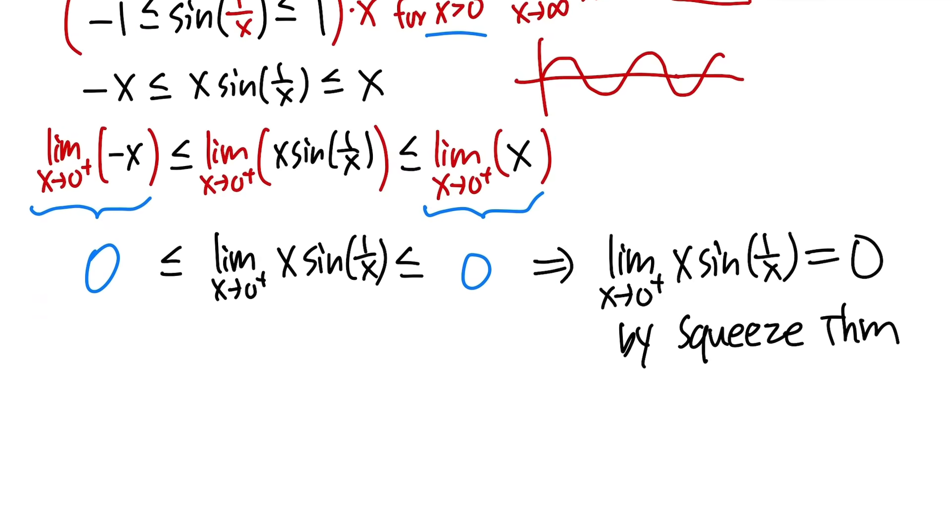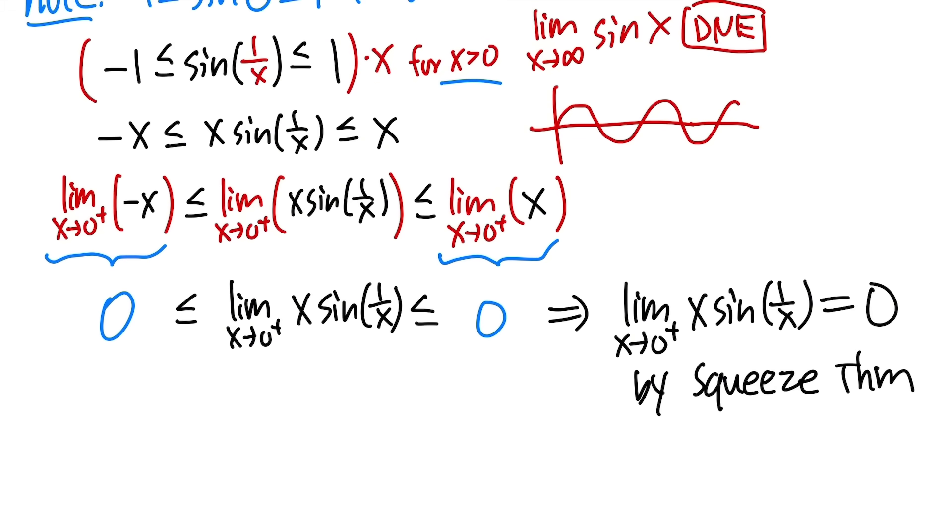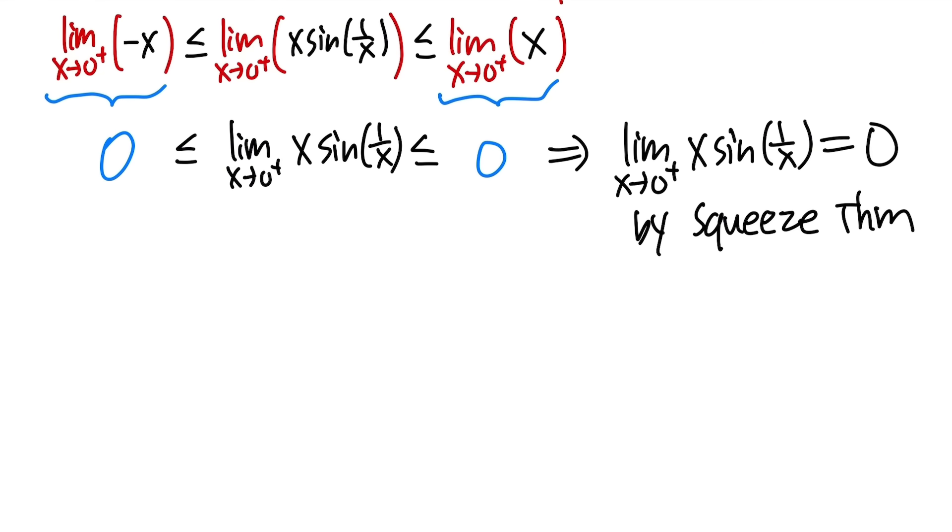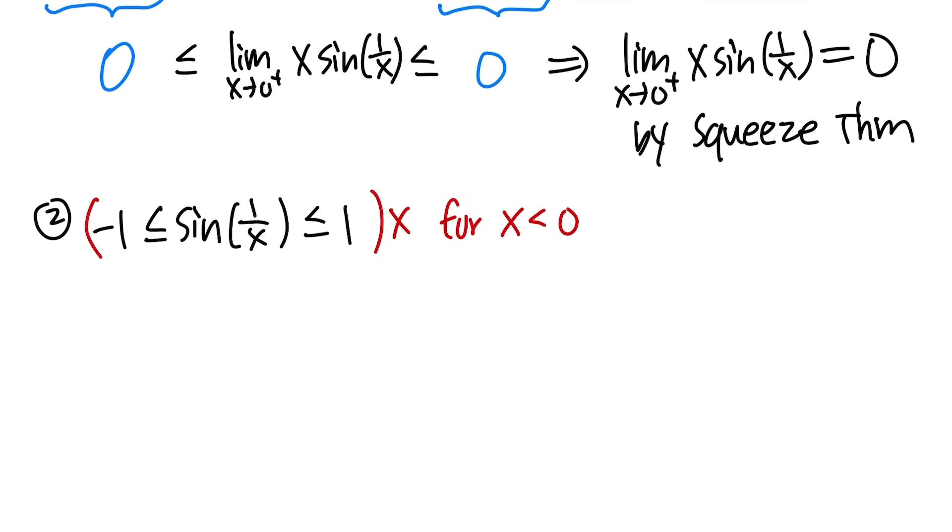I will say this is part 1, and then part 2, right here. There we go. We know that sine of 1 over x, this has to be in between negative 1 and 1. And I'm going to multiply everybody by x. But this time, it's for x less than 0. So in this case, we will get negative x, but we will have to flip the inequalities.